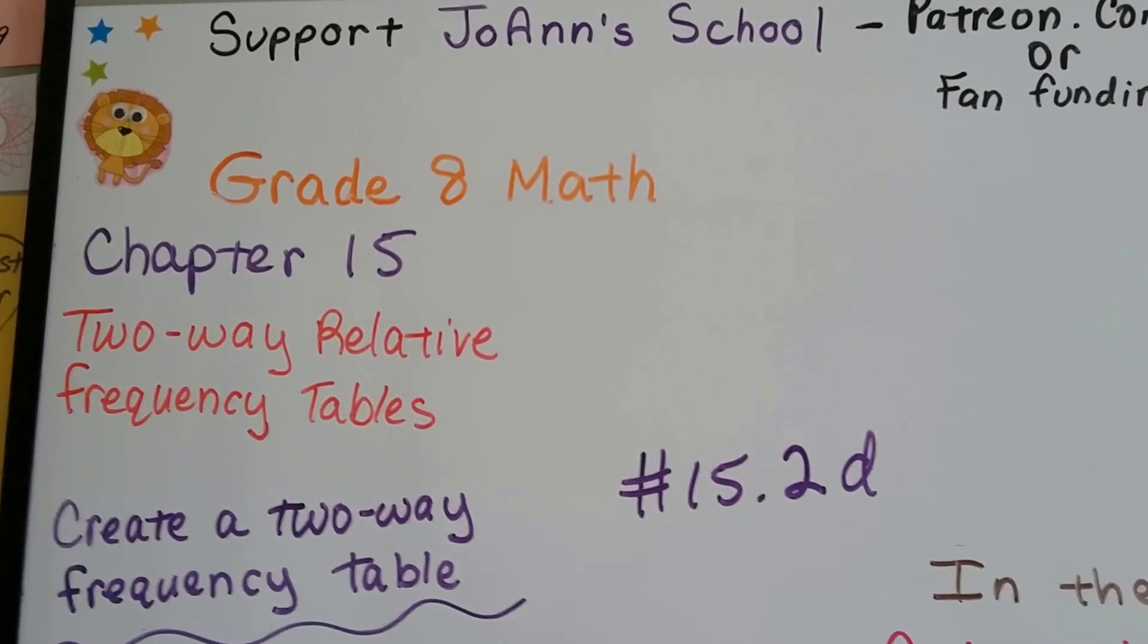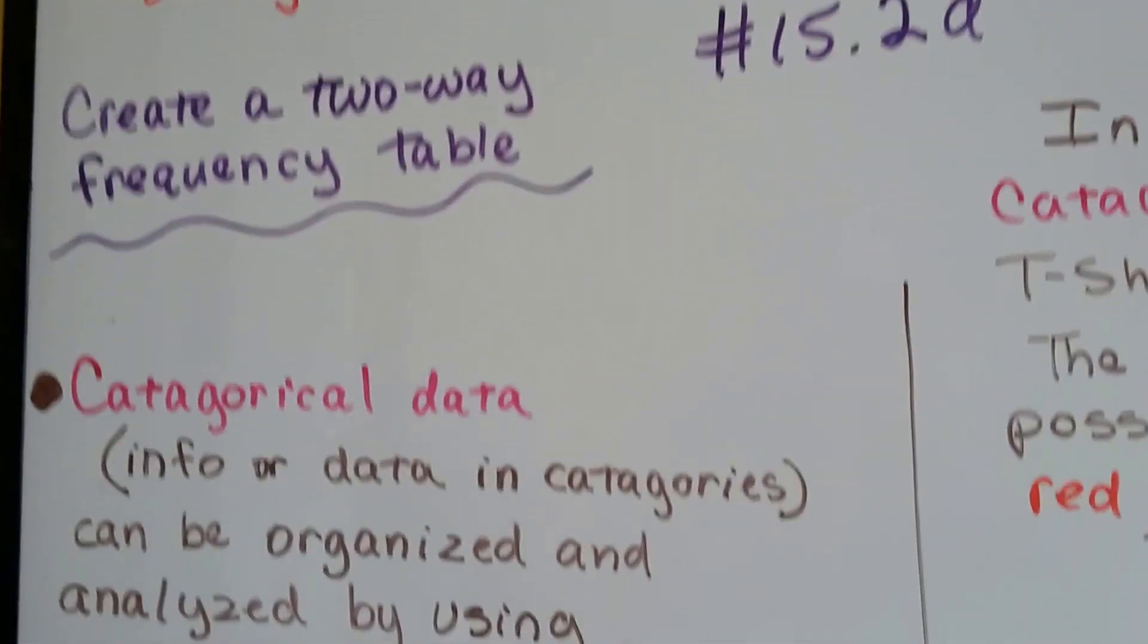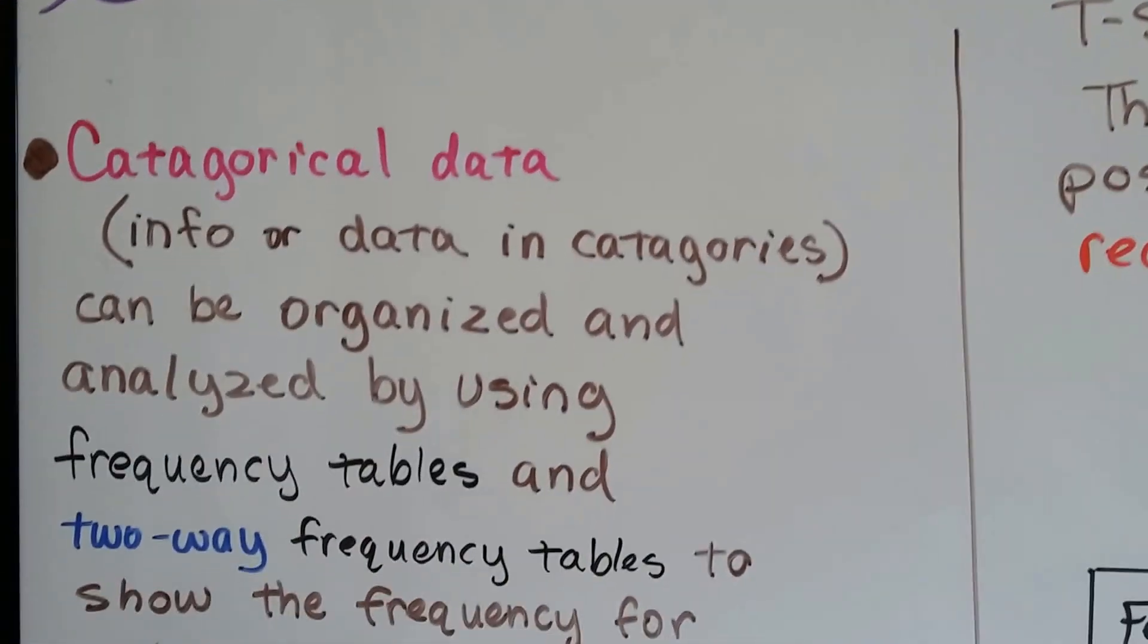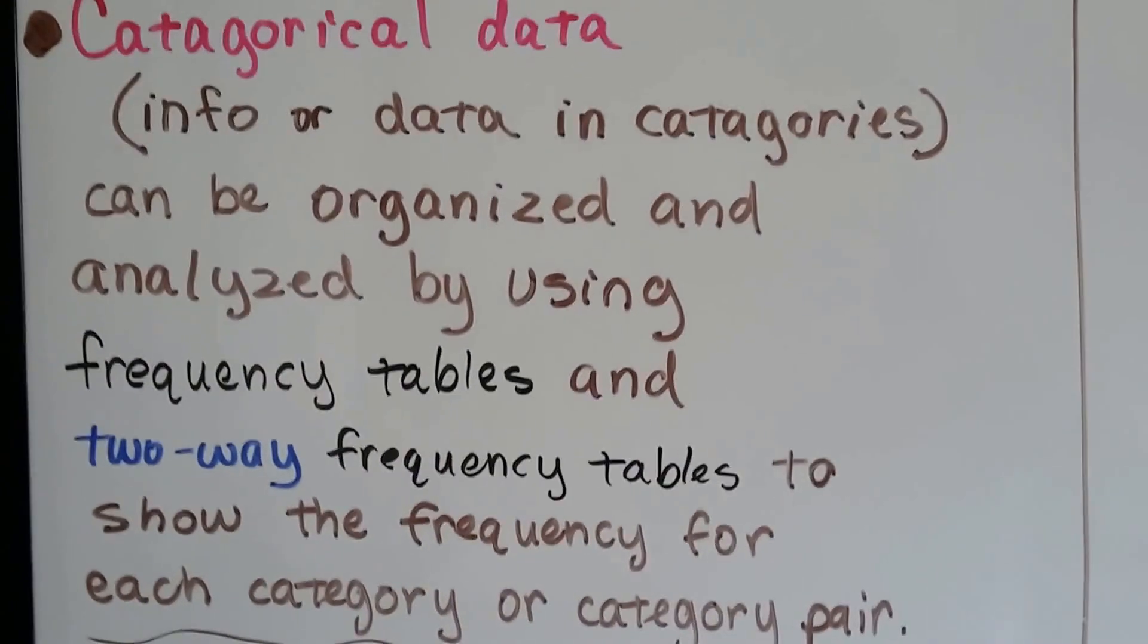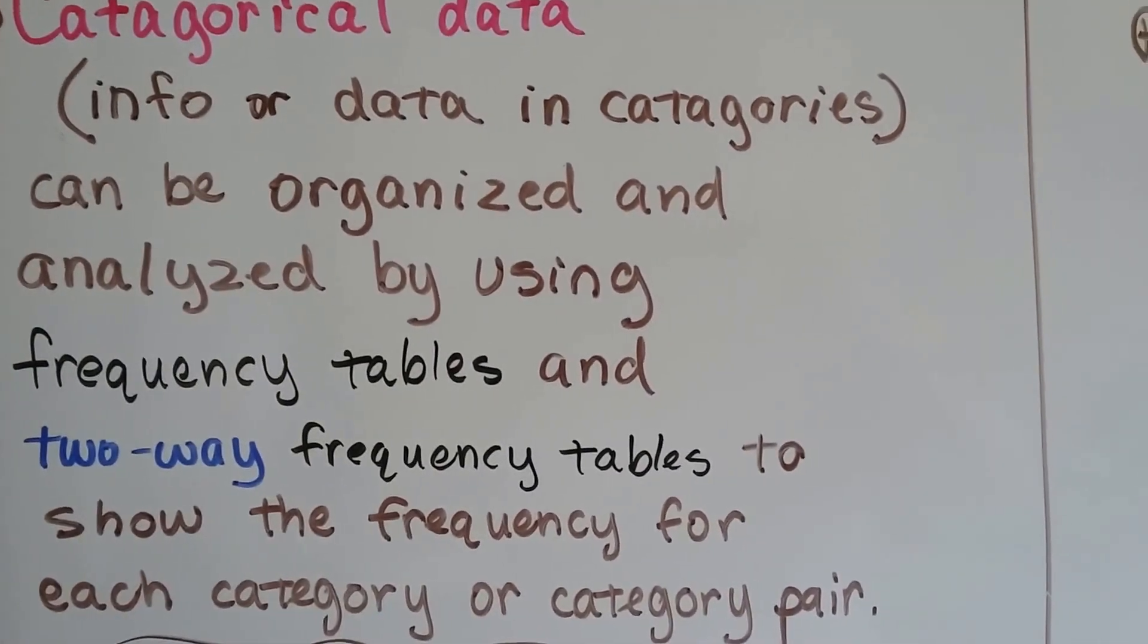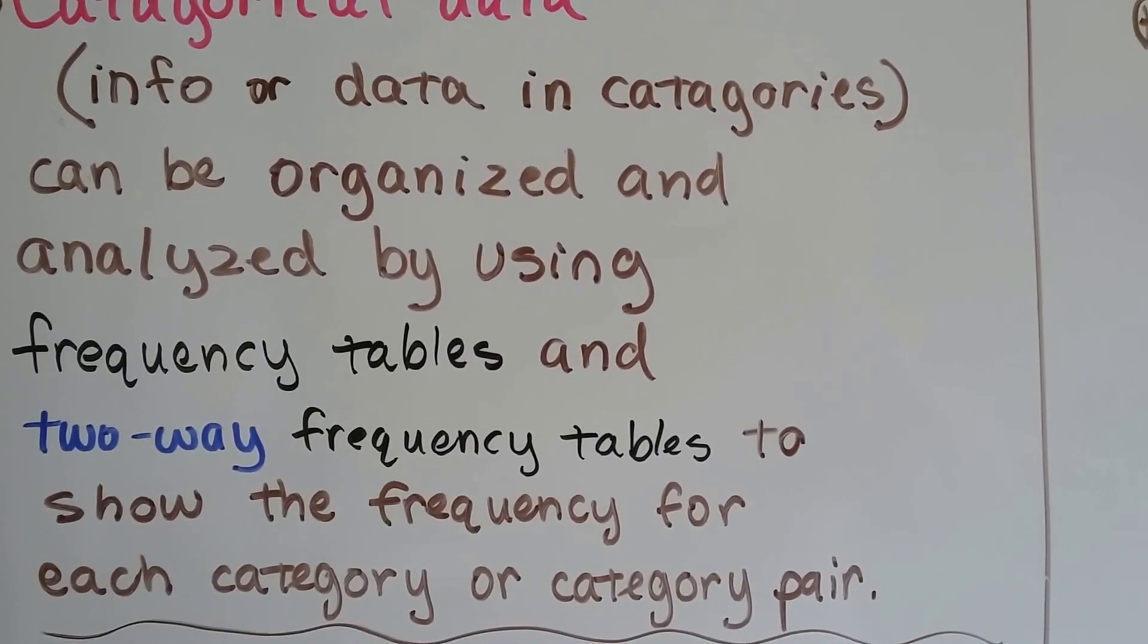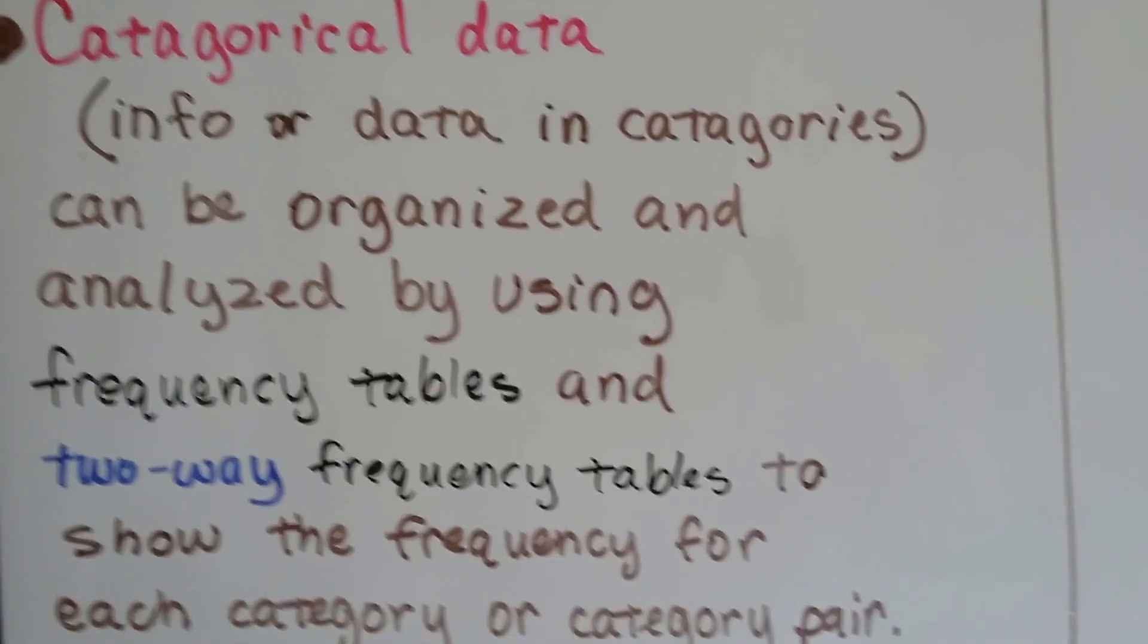Grade 8 math number 15.2d, create a two-way frequency table. Categorical data, that's info or data in categories, can be organized and analyzed by using frequency tables and two-way frequency tables to show the frequency for each category or category pair.